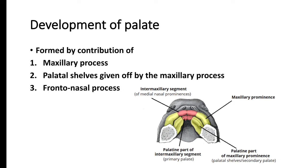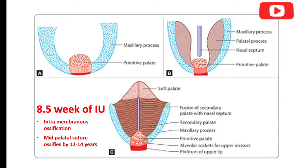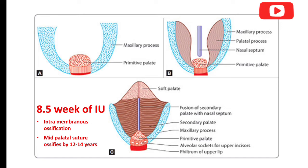The development of the palate is a very important topic. It is formed by the contribution of the maxillary process — the yellow portion in this image — and the palatal shelves, which are given off by the maxillary process, along with the anterior orange region of the frontonasal process. Development of palate occurs around 8.5 weeks of intrauterine life and the ossification of the palate is through intramembranous ossification — first a membrane appears into which osteocytes come and the ossification process begins.